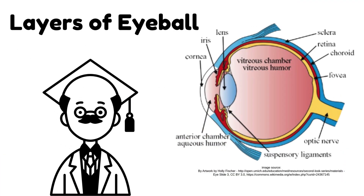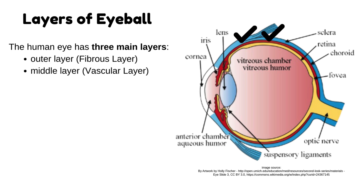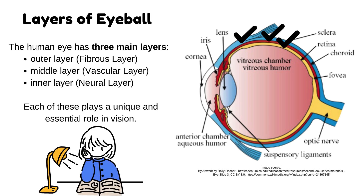The human eye is organized into three main layers: the outer fibrous layer, the middle vascular layer, and the inner neural layer. Each of these plays a unique and essential role in vision. We will discuss them one by one.